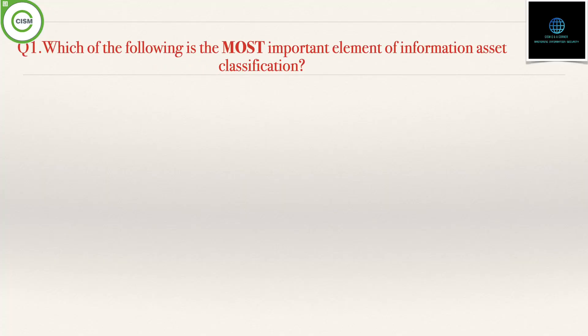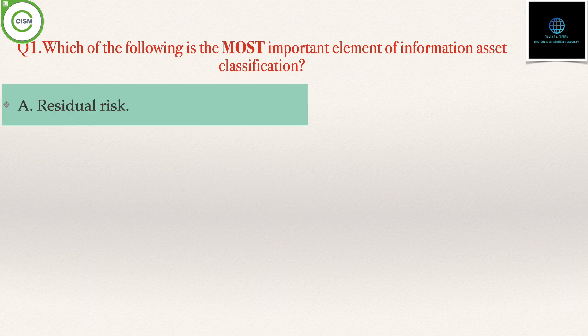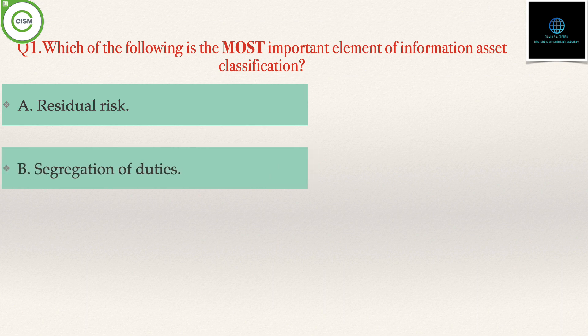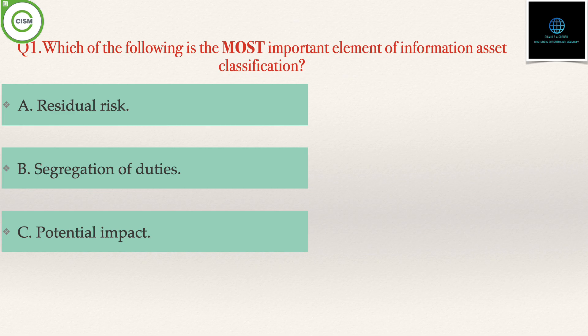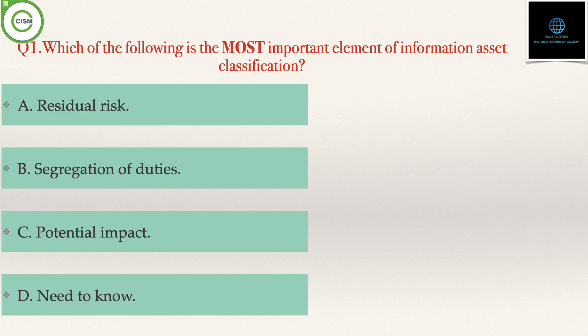The first question states: which of the following is the most important element of information asset classification? Option C is potential impact, and option D is need to know.